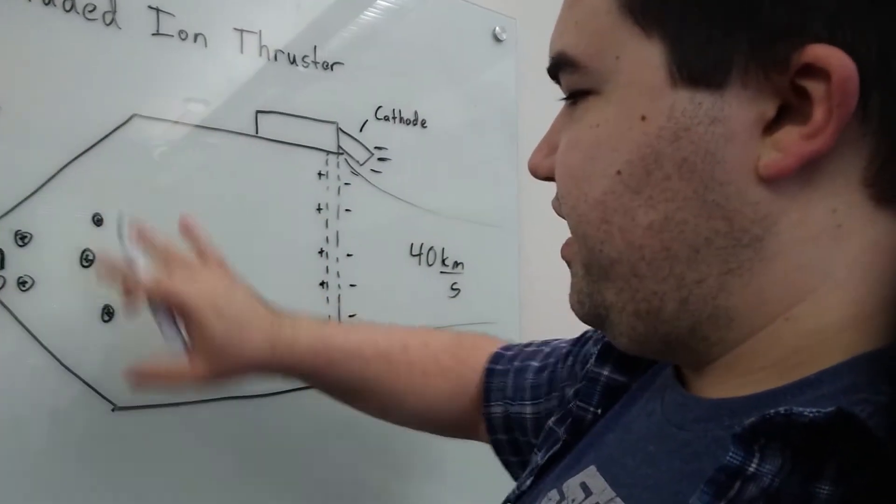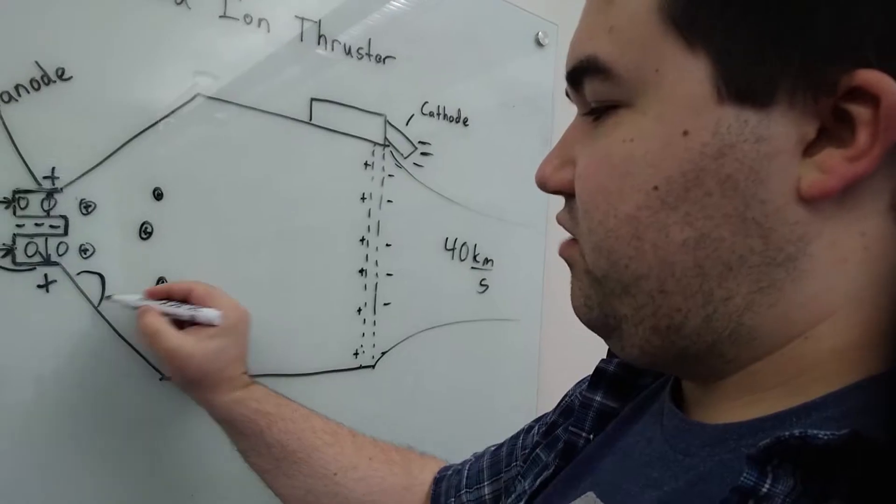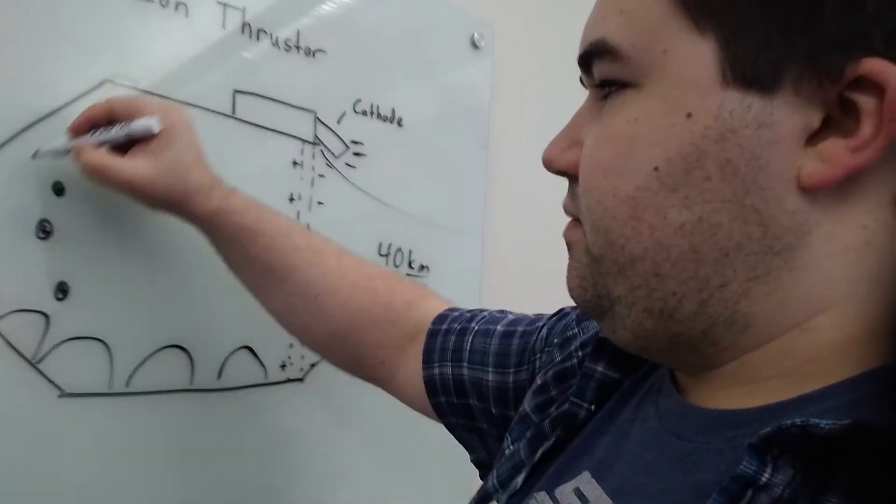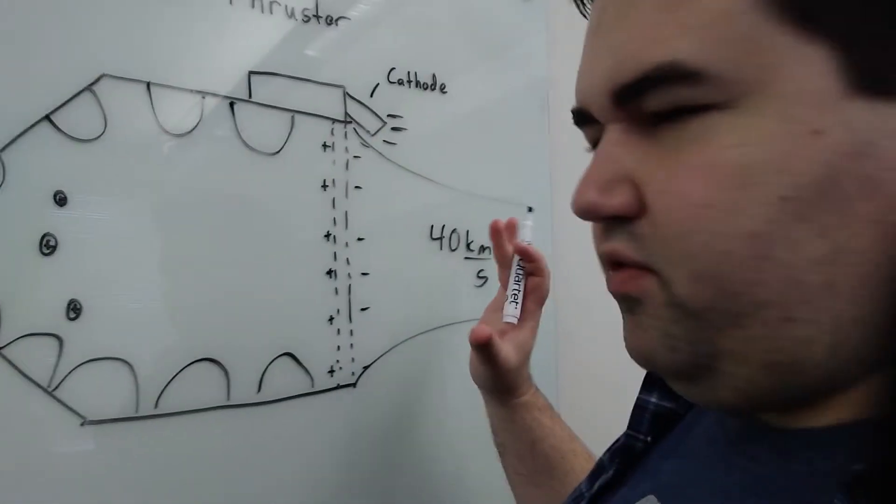And because xenon atoms are moving around in here quite a bit, you want to be able to confine them. So there are magnetic fields that are aligned along the edges of the plasma thruster to keep everything confined and moving towards the back. Pretty straightforward.